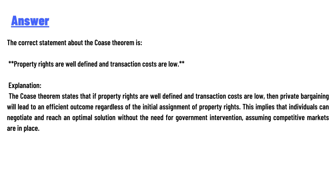The answer is: property rights are well defined and transaction costs are low. The Coase theorem states that if property rights are well defined and transaction costs are low, then private bargaining will lead to an efficient outcome regardless of the initial assignment of property rights.